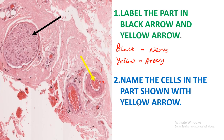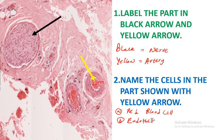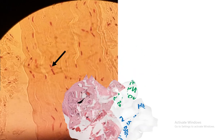Next question: name the cells in the part shown with the yellow arrow. If you look at the inside of this blood vessel, you can identify red blood cells. You can also identify endothelial cells, which are responsible for the formation of the endothelial lining of the blood vessel. The endothelium is the special name given to the simple squamous epithelium found in the blood vessel.